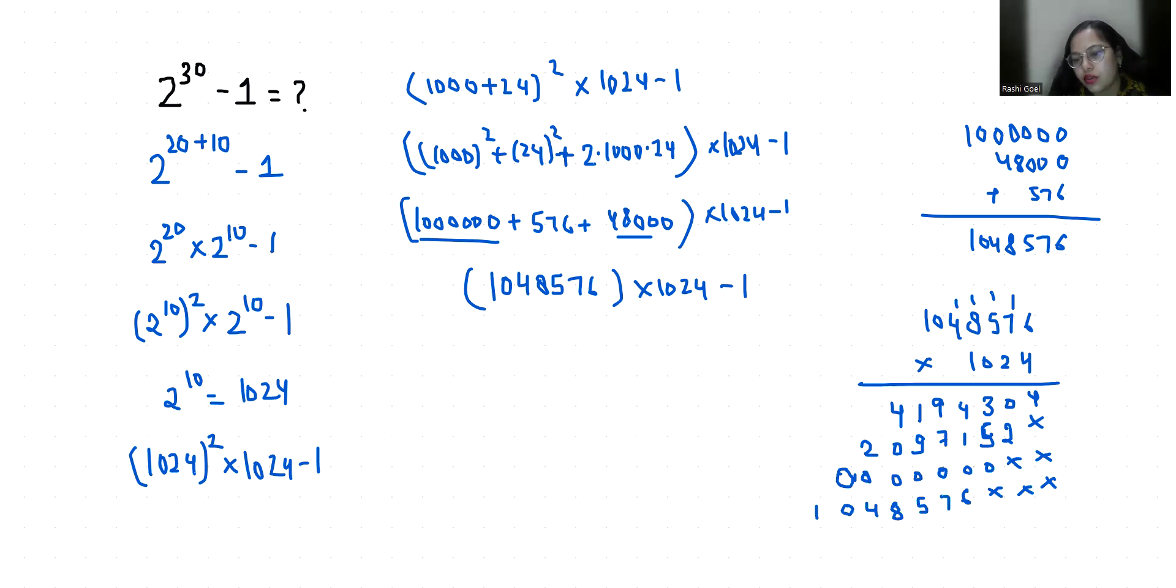So it becomes 4, 2, 8. 6 plus 4 is 10. Carry over 1, 11. 9 plus 1, 10. 10 plus 14 is 24. 9 plus 1, 10. 10 plus 5, 15, 2, 17. 15, 11, 16. Carry over 1. Now 4 plus 8, 12 and 1, 13. 4 plus 2, 6 and 1, 7. 0, 1.